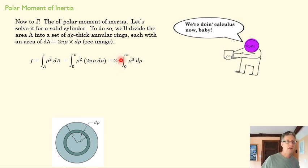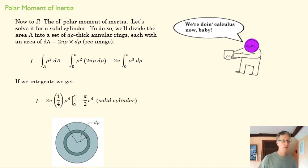We pull out our constants, and we've got the integration of ρ to the third from 0 to C. In other words, from the center out to the edge of the circle. If we integrate this, a relatively straightforward integration, we're going to get a ρ to the fourth term.